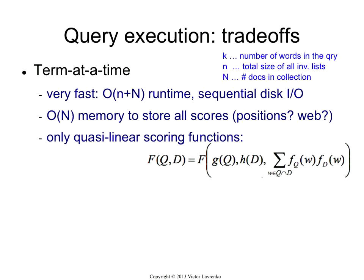F must be decomposable into three parts. This little G is something that depends only on the query. H is something that depends only on the document — so these are effectively constants. And then the third part must be a form of a dot product, a form of an intersection between the query set and the document set. So here I have some function of words in the query, some function of words in the document, some form of multiplication between those functions — it must occur both in the query and the document, and I'm summing up over the intersection. So if you can decompose your scoring function like that, then you can use term-at-a-time.